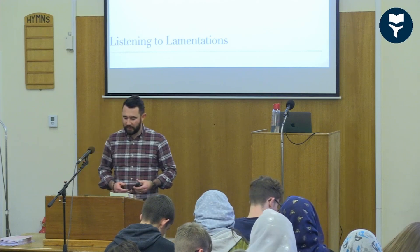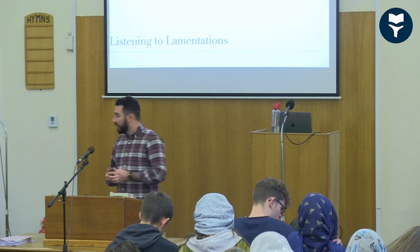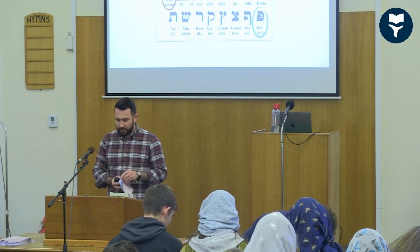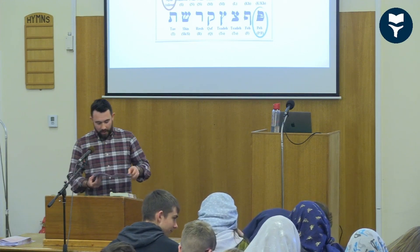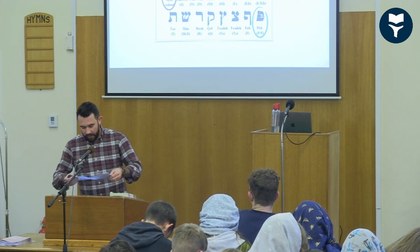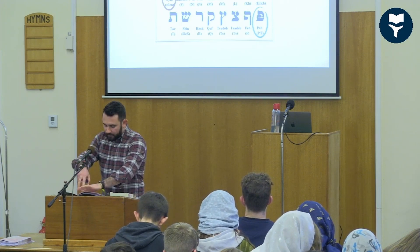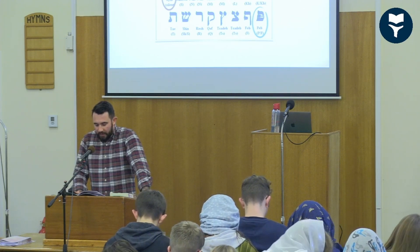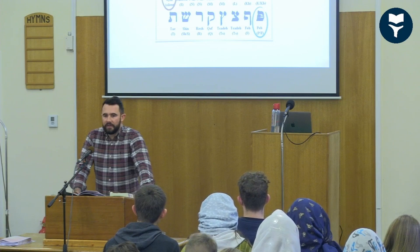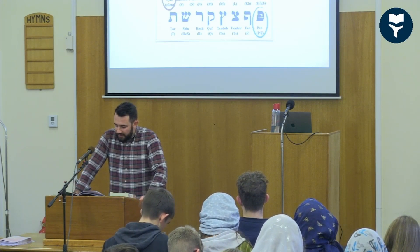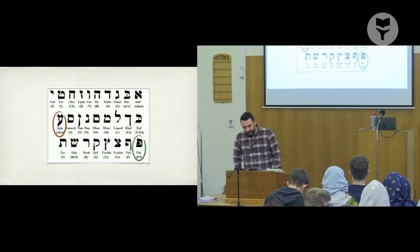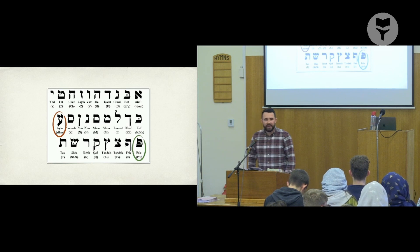Ayin and Pe — thank you very much. The three times in chapter two, chapter three, and chapter four, the Pe comes before the Ayin. I said at the time that God intended this for a purpose — it can't just be by chance. Perhaps you were thinking over the break: why did God intend for these letters to be swapped over? Is there a purpose to it?